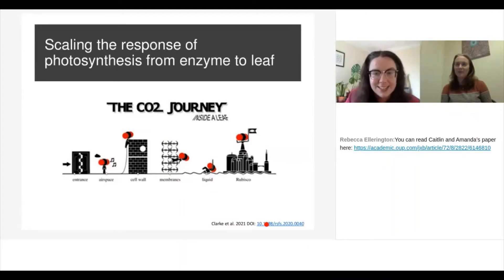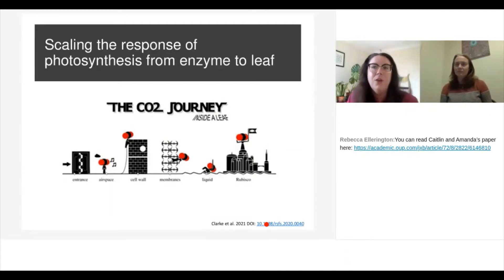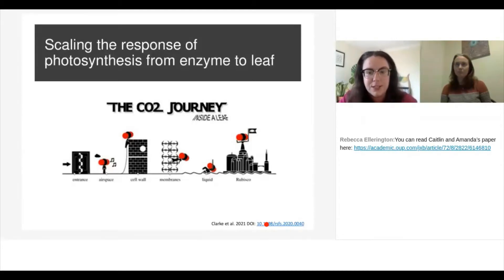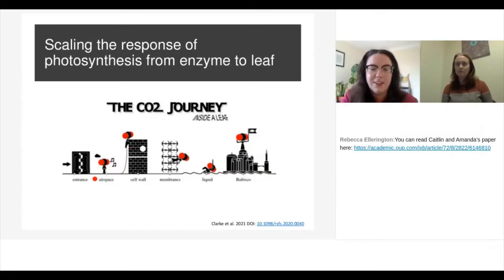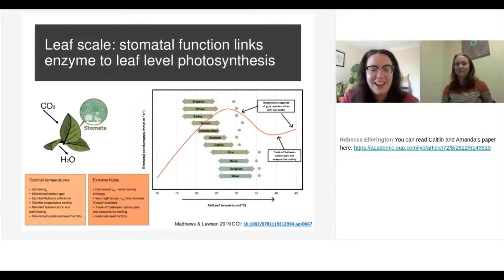Just because I love enzymes doesn't mean that's where everything stops. As we scale responses from the enzyme to the leaf, we're building complexity — a leaf is not just one large pool of enzymes. One of the main sources of this added complexity is following CO2 diffusion into the leaf, portrayed really well in a lovely graphic by Tory Clark, a postdoc at ANU who has just published a wonderful paper. This really outlines the different resistances that a molecule of CO2 will find before it gets to the site of carboxylation, to rubisco. In our paper, we focused on the entrance of CO2 into the leaf — the stomata.